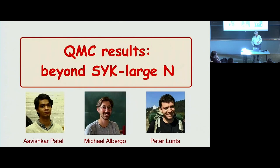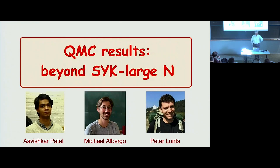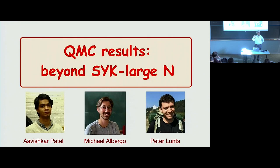In the last two minutes: this is work led by Avis Karpatel, Peter Lunts, and Michael Albergo at Flatiron. They're taking this simple model and everything I've said is based on some kind of large-N SYK-type analysis of this model, so I really have to ask how accurate that is. One way you can test this is to do quantum Monte Carlo. Just five minutes before my talk they emailed me their slides — I'm showing you this work, I'm not part of it, but I'm pretty excited about what they're seeing.